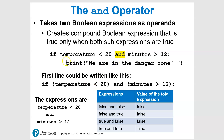So the two expressions are: temperature less than 20, and minutes greater than 12. When using 'and', if one of them is false - whether it's the first or the second - the whole expression is false. Both have to be true in order for the if statement to be true. That's something important to remember with 'and'.